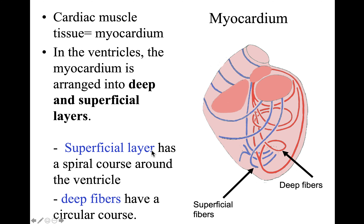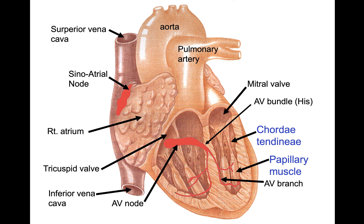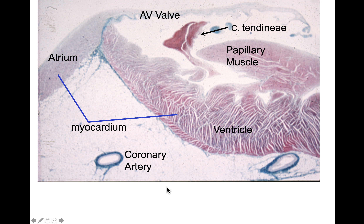The superficial muscle layer has a spiral course around the ventricles — almost oblique in direction — whereas the deep layer has a more circular course around the heart. Looking at the slide, the middle layer throughout is cardiac muscle. We can identify the atrium, the ventricles, and papillary muscles, with the endothelium and myocardium showing both superficial and deep layers.